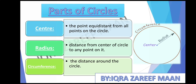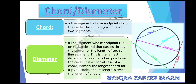Next is chord and diameter. A chord is a line segment whose endpoints lie on the circle, thus dividing the circle into two segments. The blue line here represents a chord. A diameter is a line segment whose endpoints also lie on the circle but passes through the center. The diameter is the largest distance between any two points on the circle, and it is the longest chord. Its length is twice the length of the radius.